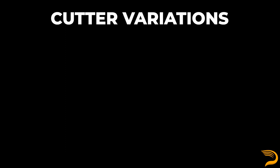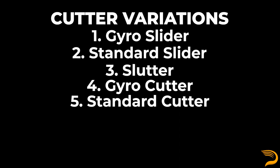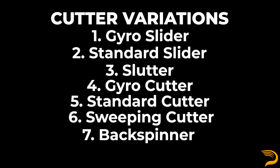If you've seen our video on sliders and curveballs, you'll know that there's a ton of movement variety across the league. This persists with the cutter, though the fluctuation is a bit less relative to the slider. The cutter movement profiles we've noted for this video are the following: our sliders — those being the gyro slider and the standard slider — the slutter, the gyro cutter, the standard cutter, the sweeping cutter, and finally the back spinner.